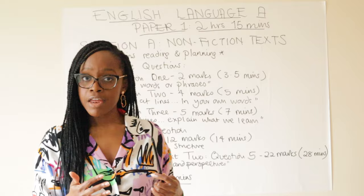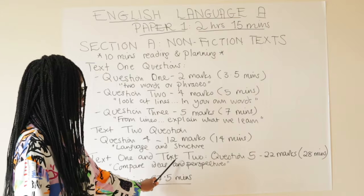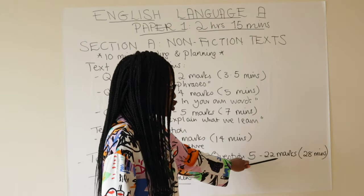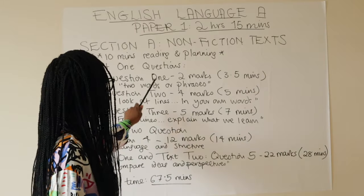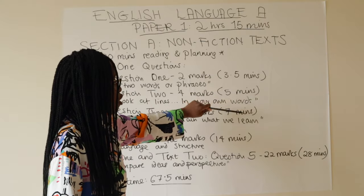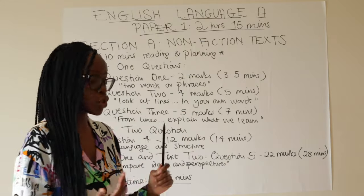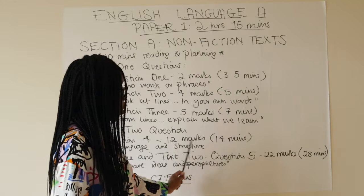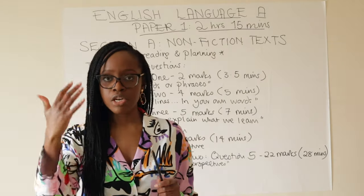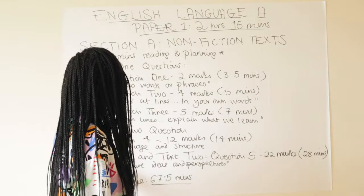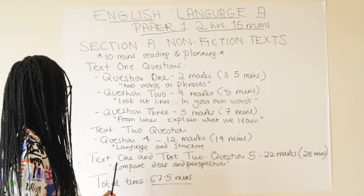Finally, question five in Section A is where you compare Text 1 and Text 2. This question is worth 22 marks, so spend 28 minutes on it. The reason to be strict with questions one, two, and three — spending 3.5, 5, and 7 minutes respectively — is so you have sufficient time for the 12-marker and especially the 22-marker. It's really counterproductive to rush through the latter questions because that's where the bulk of the marks are.